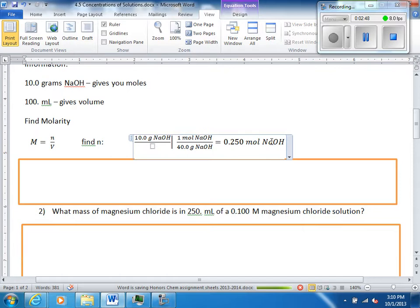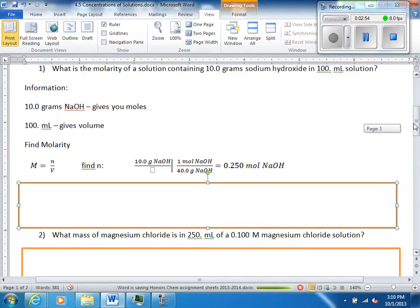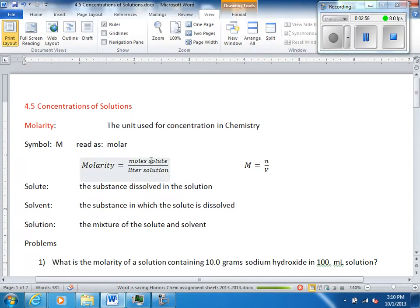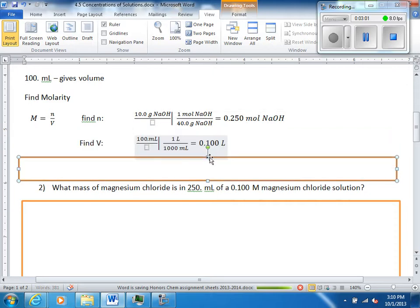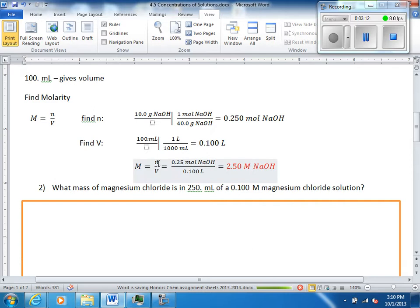So, we have 0.25 moles of NaOH. And then the volume, we're going to have to convert this 100 mils into liters, because the definition was moles solute per liter solution. So, we will convert milliliters to liters. You have to remember that conversion factor. A thousand mils is one liter. Now, we'll just plug into our equation. Molarity is moles over liters. Plug in our moles. Plug in our liters. And we get 2.5 molar NaOH. And that is our answer.